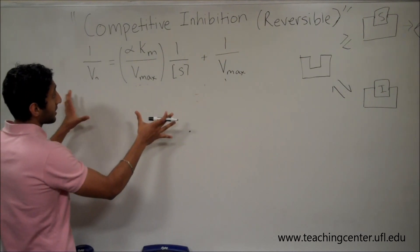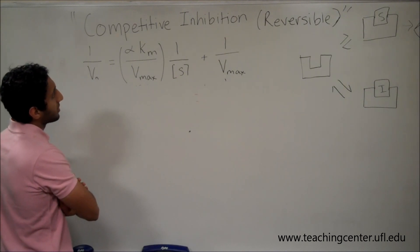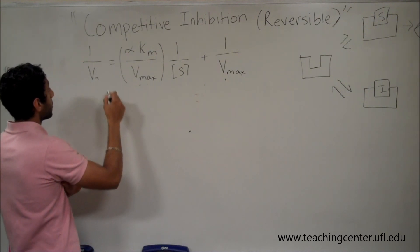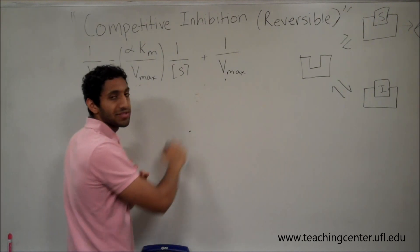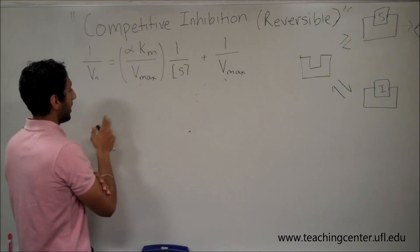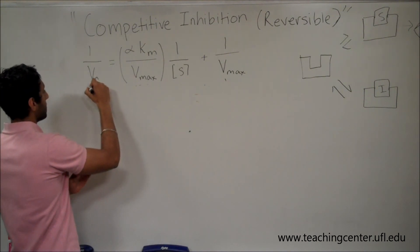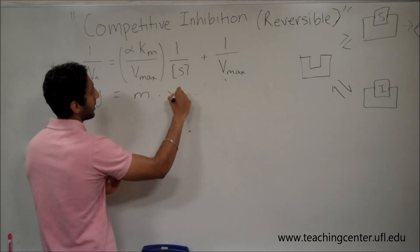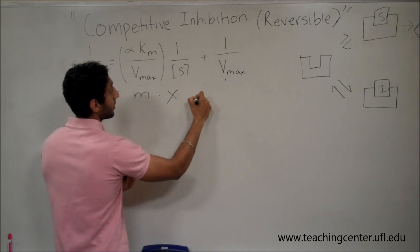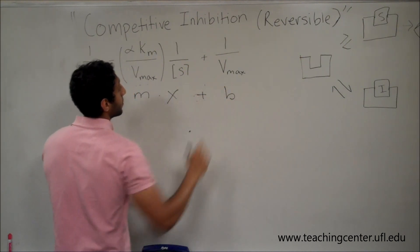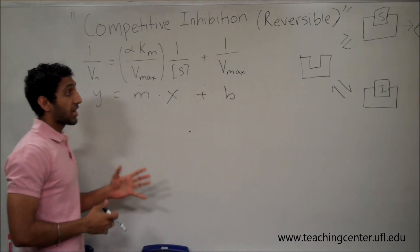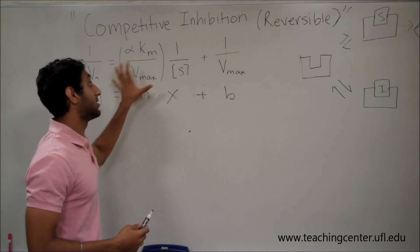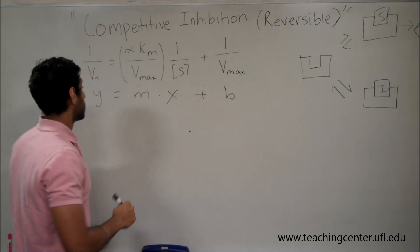Here is an example of what the Michaelis-Menten equation looks like under competitive inhibition. In particular, you'll notice that it shares a lot of the same characteristics as a linear function. You can see that this is like y equals, and this is like slope m times x plus b, the y-intercept. When you're looking at these plots, it'll be easier to understand what's going on if you know that this equation in particular is a linear function.